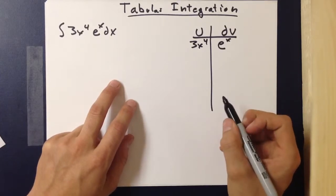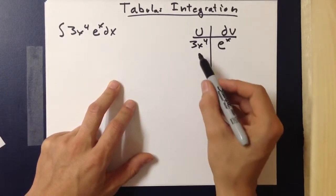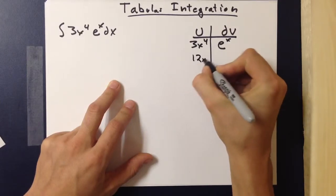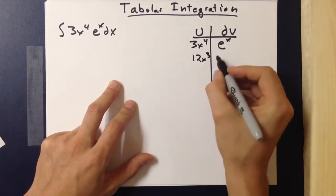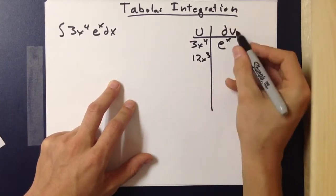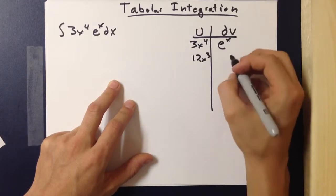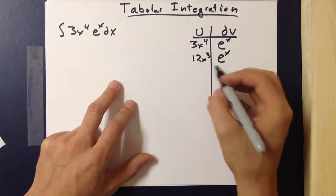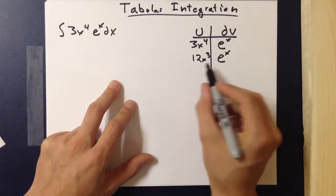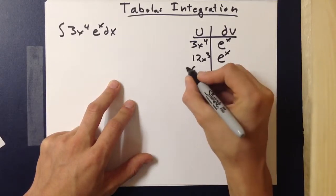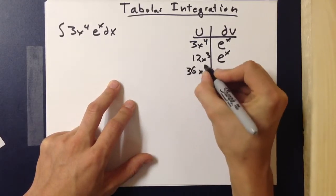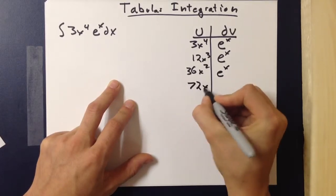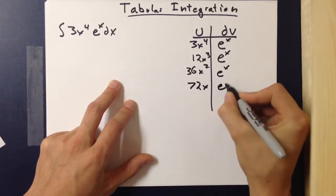Now, following LIATE rules, for u you would take the derivative, so 12x cubed. Then you would take the integral of e to the x, so e to the x. Then you take the derivative again from the left side: 36x squared, e to the x — just repeating this process various times.